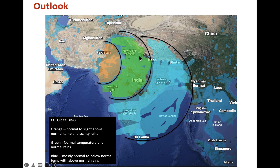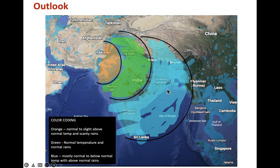Now we will start getting some thundershowers. Maharashtra has largely been missing out, but should start seeing thundershowers from May 5th or 6th onwards — that is going to be very important. The blue region covers south peninsular India, parts of central India especially Telangana and Andhra Pradesh, West Bengal, and Northeastern India. This region will likely see mostly below normal to normal temperatures and above normal rainfall. So this region is going to get some heavy rainfall in the coming days, which is likely to continue for the rest of May as well.